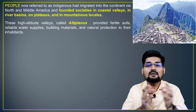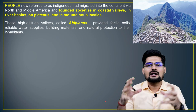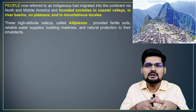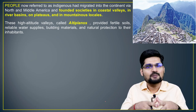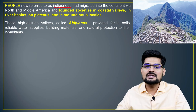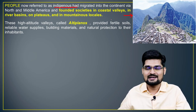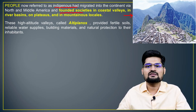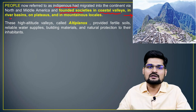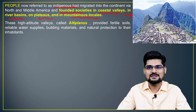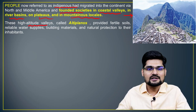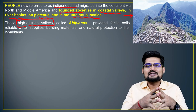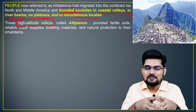Physiography and people are the two main components of regional geography. Regarding how this continent was peopled: the indigenous people are the Incas. Inca civilization was the major civilization in this area and these societies were founded in coastal valleys, river basins, plateaus, and mountain locales. These high-altitude valleys are called Altiplanos, where altiplanation is the process. Altiplanos have fertile soils, reliable water supplies, and building materials, which is where old construction happened.